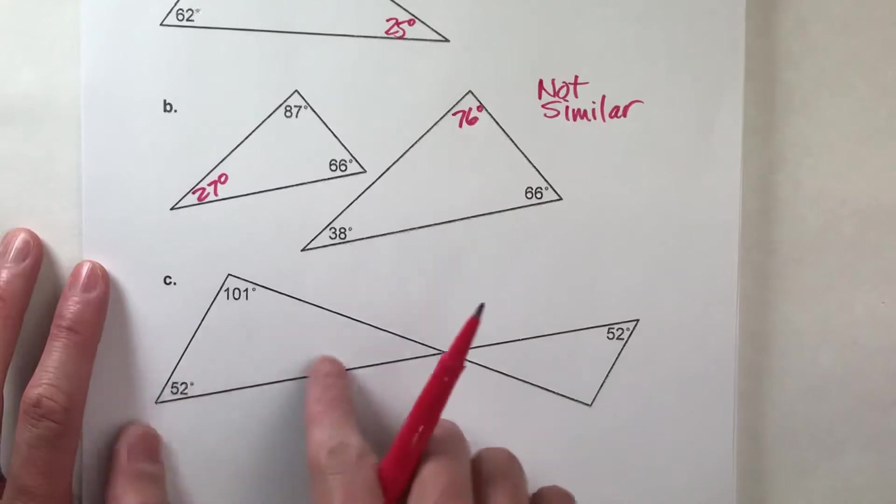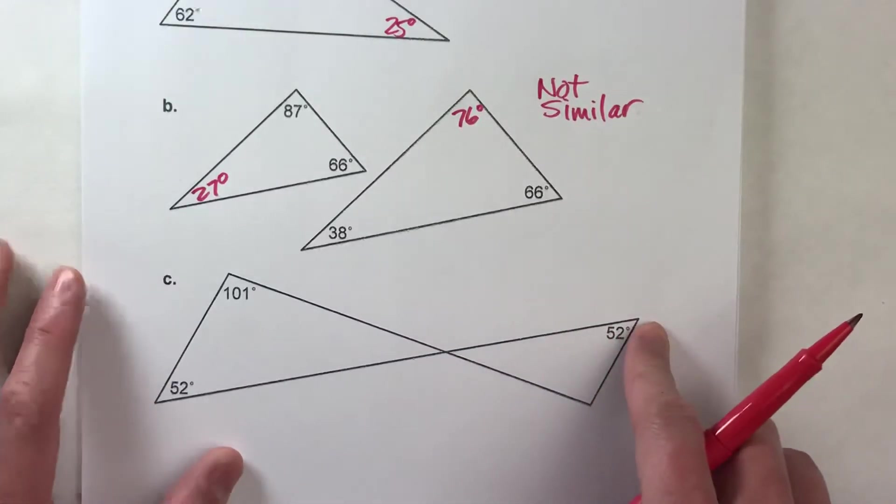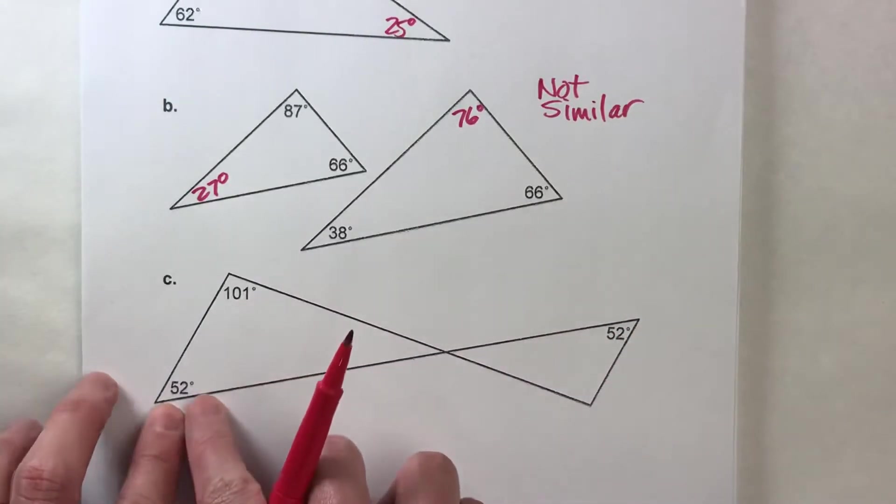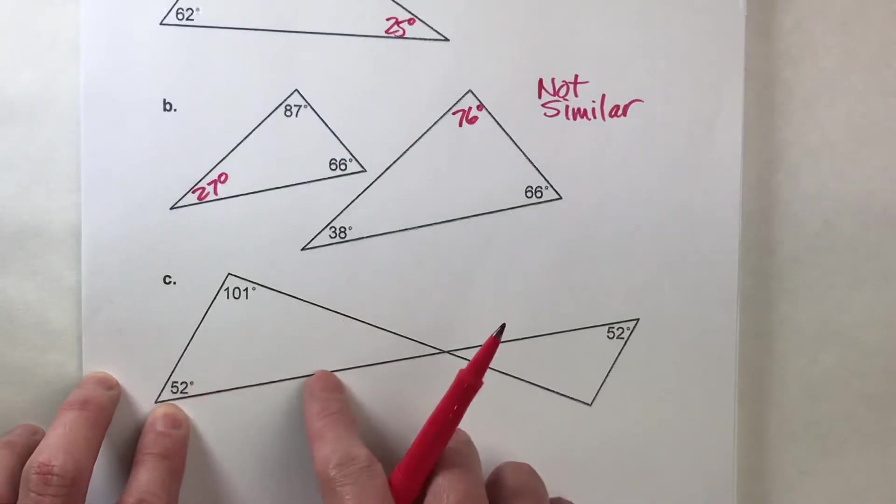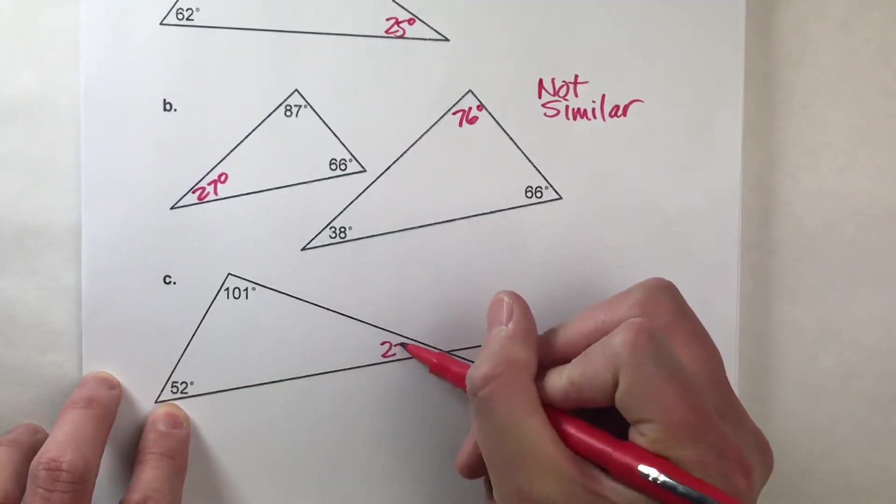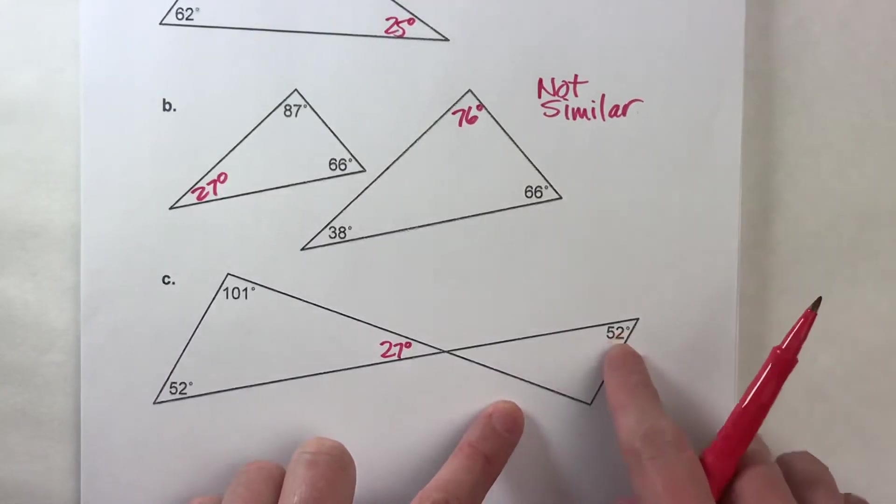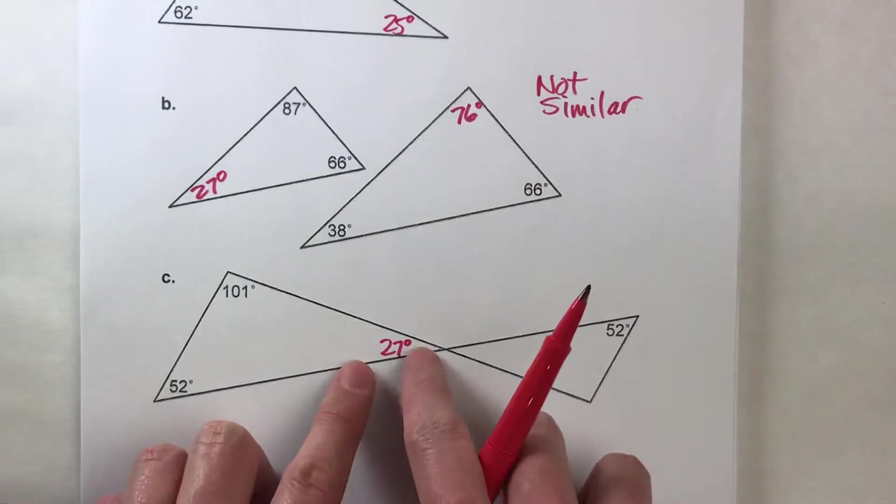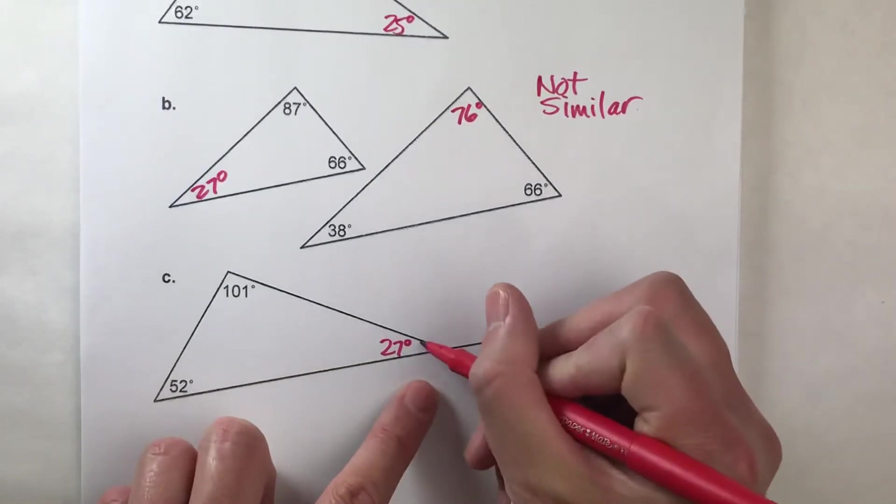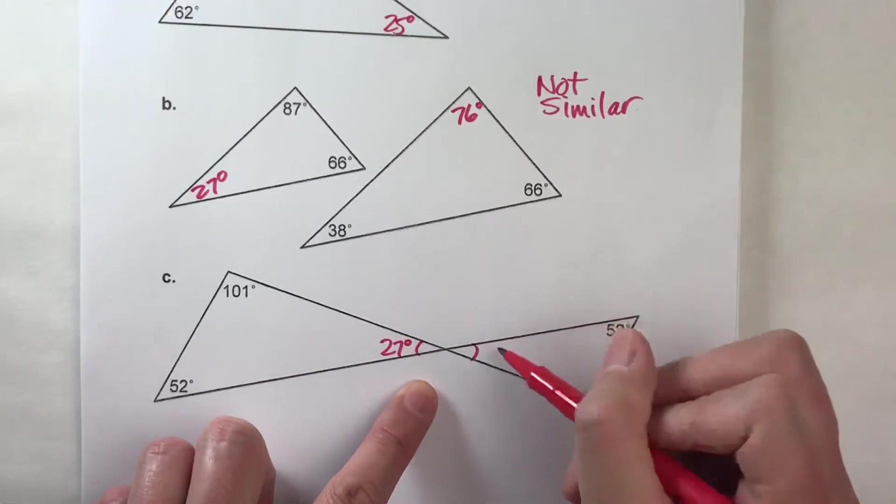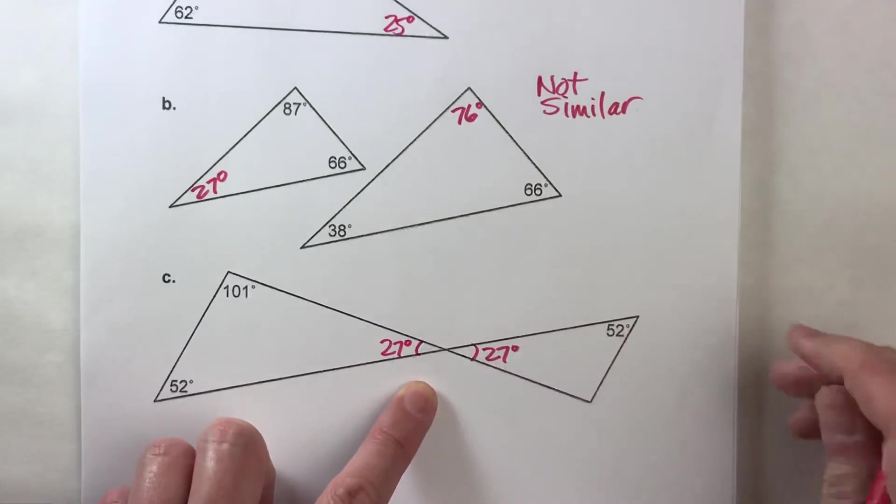Let's do one more. Here we go. So we've got a triangle here, we've got a triangle here. This is 101, this is 52, so they add up to 153. That makes this angle right here 27 degrees. Now over here, they only give you one angle inside, but we've got vertical angles here. So if this angle here is 27, this angle here also has to be 27 degrees.